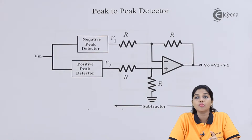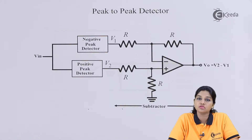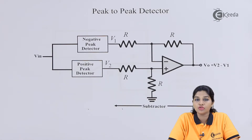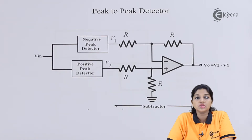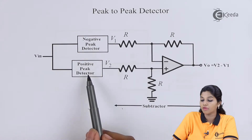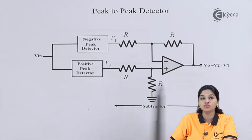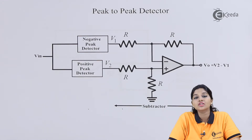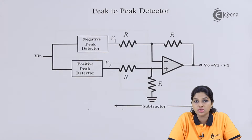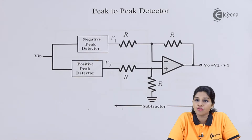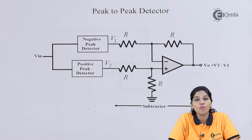The peak-to-peak detector is the circuit which detects the positive as well as negative peak value of the input signal and holds that value for a certain period of time. The circuit of a peak-to-peak detector basically consists of a negative peak detector circuit, a positive peak detector circuit, and an op-amp used in a subtractor mode. Now let's understand how the circuit of positive peak detector works. In case of positive peak detector, the op-amp is used in a voltage follower configuration, meaning the gain of the op-amp is equal to 1.